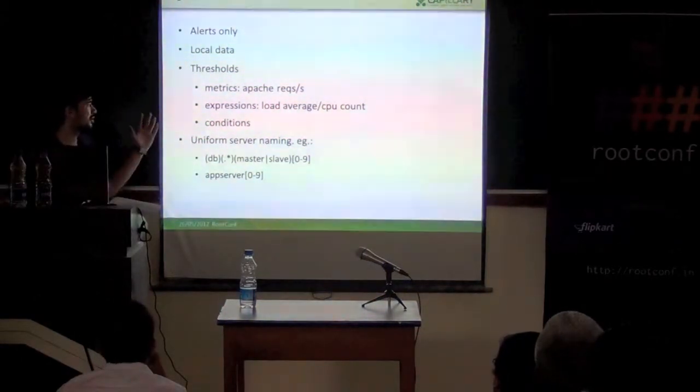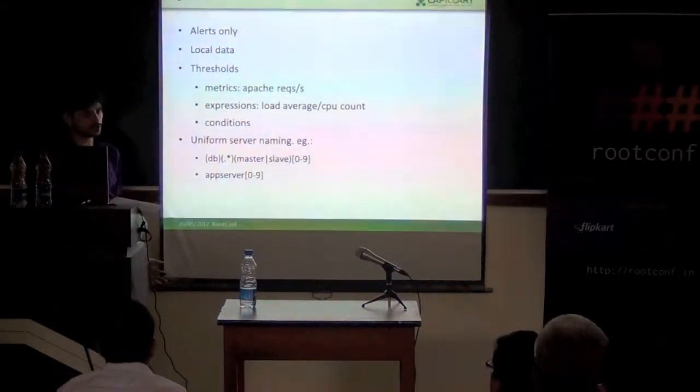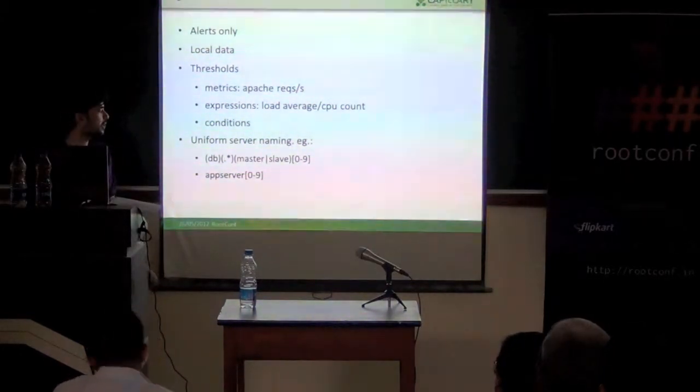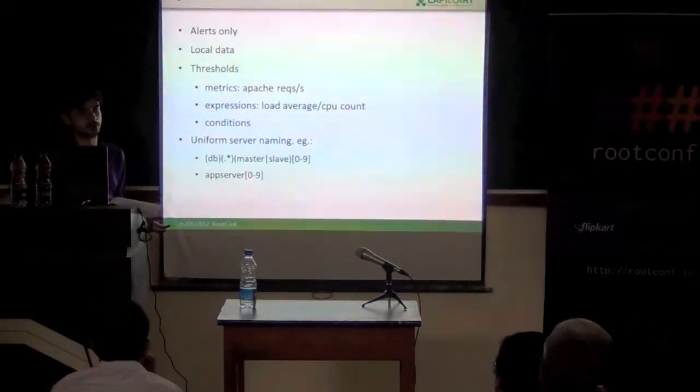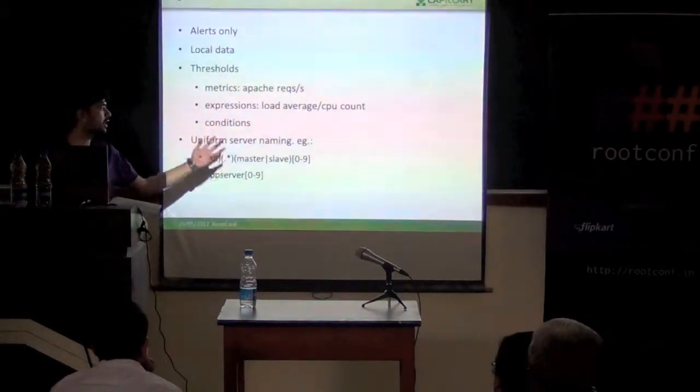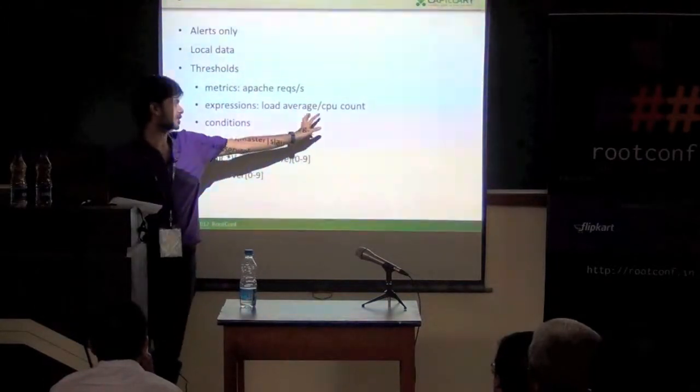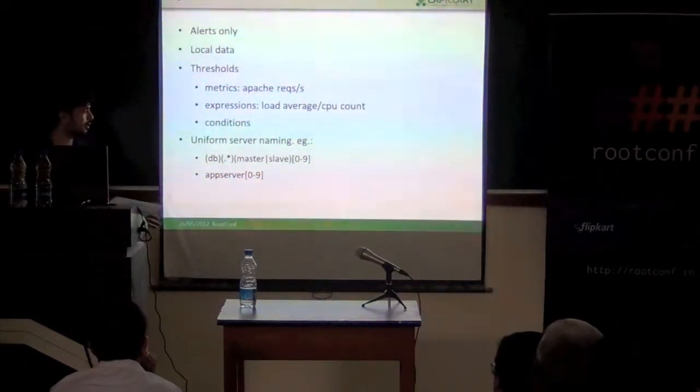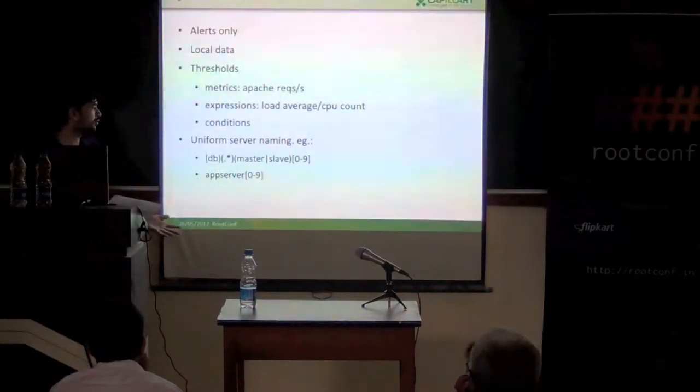Our Nagios setup uses local data only and we have made some custom changes to Nagios. We can set thresholds on metrics across our server farm. We can set thresholds on expressions of metrics. Like if the metrics were load average and one-minute load, and I wanted to set a threshold of one per CPU - a load of one on one CPU or two on two CPUs - I can directly write an expression load by CPU. Both of these are metrics available. And even such complex expressions can be set over all the metrics available across all servers.